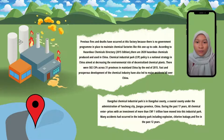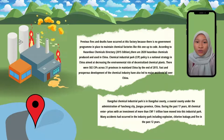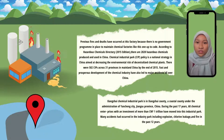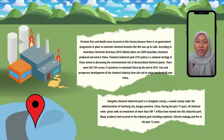Next, the background of the chemical plant accident. Zhangxiu Chemical Industrial Park is located in Zhangxiu County, which is under the administration of Yangchang City, Zhangxiu Province, in China. During the past 17 years, 168 chemical enterprises with an investment of more than 1 trillion Chinese Renminbi have been moved into the industrial park.